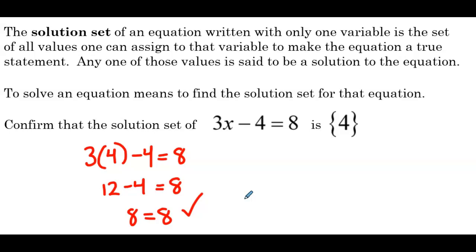When we have all real numbers as our solution set, I would test 2 or 3 values to make sure they make the equation true. No solution is a little harder to check, because we'd have to verify it doesn't work for every possible value — an infinite number of things. But I would check 1 or 2 values to see if we missed an x value that would have worked.